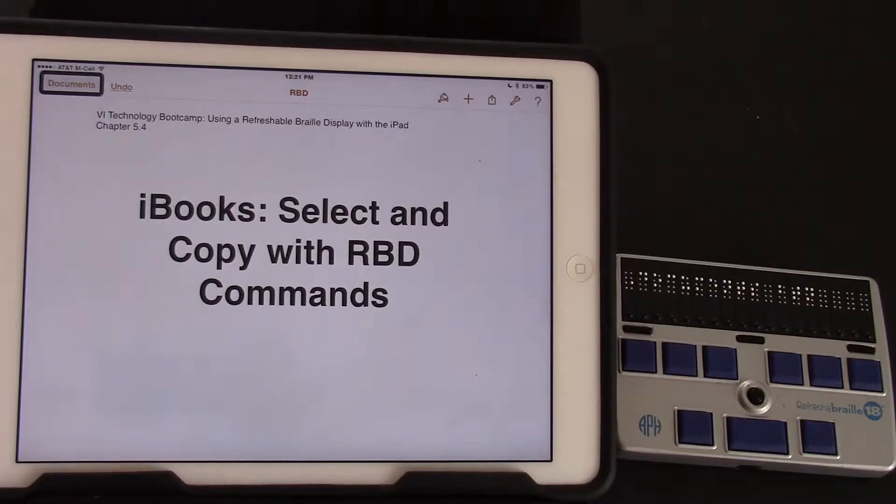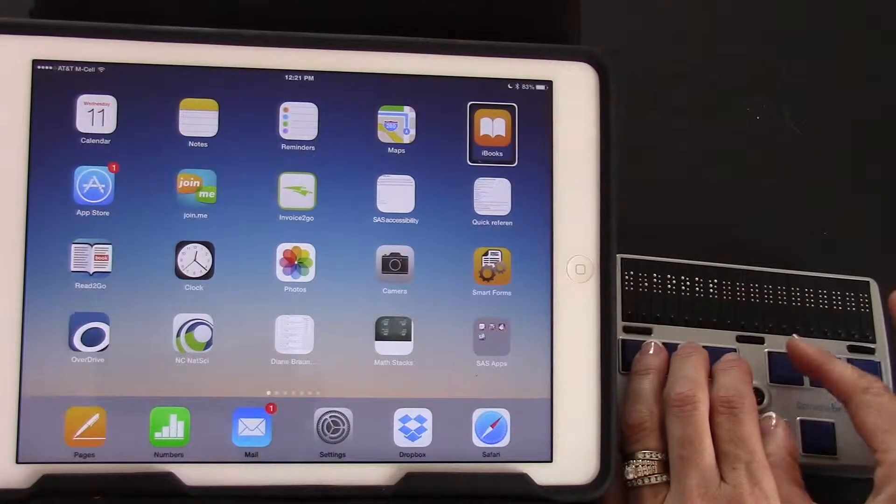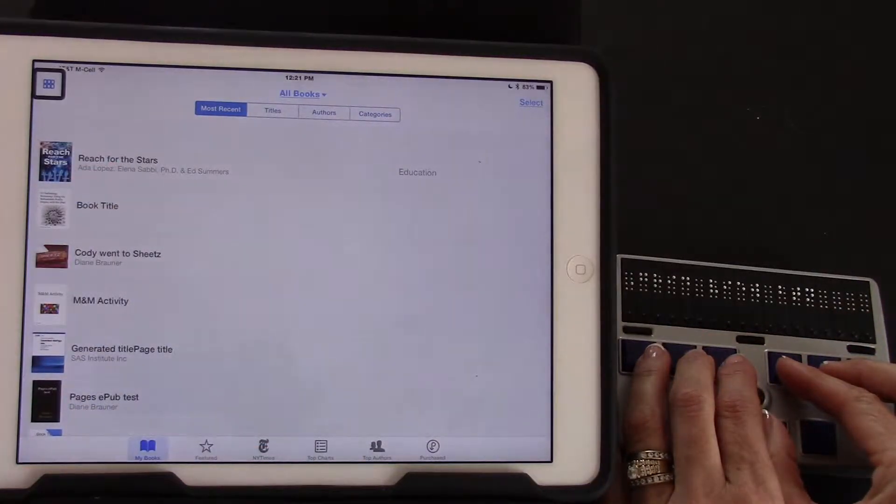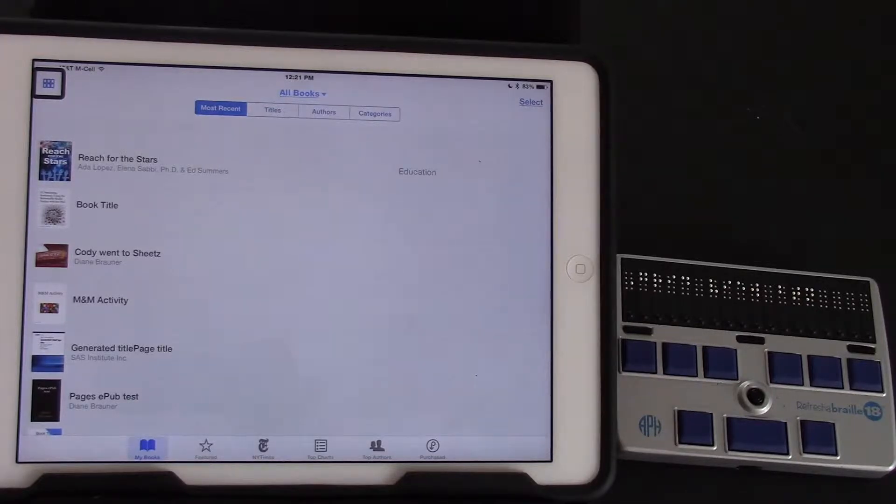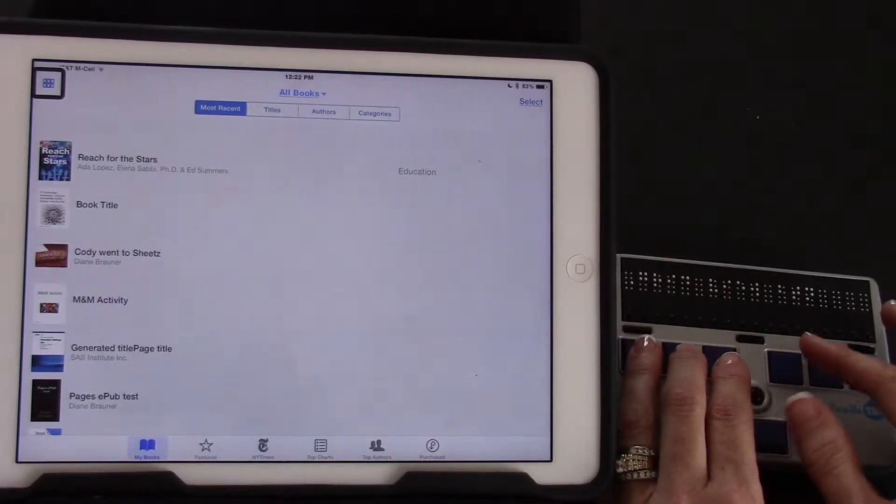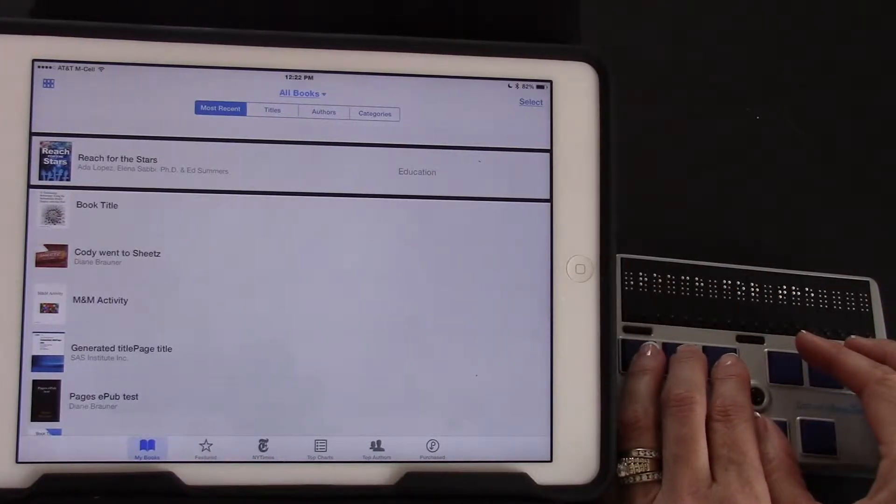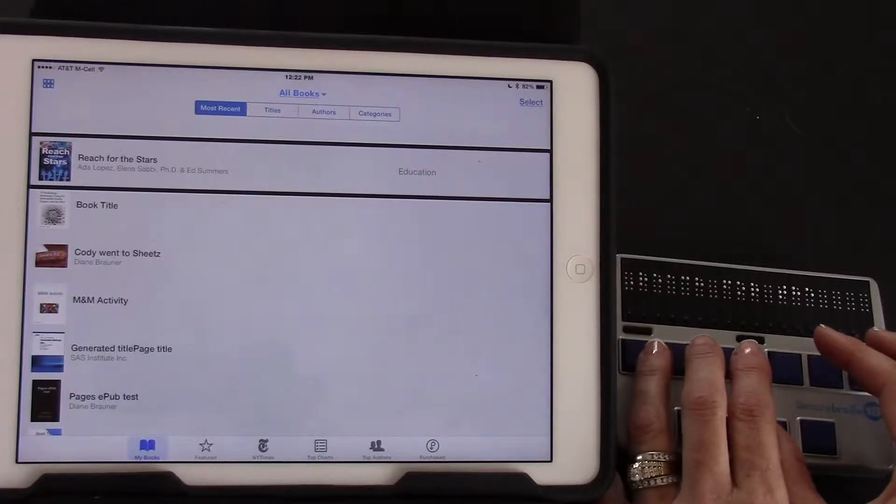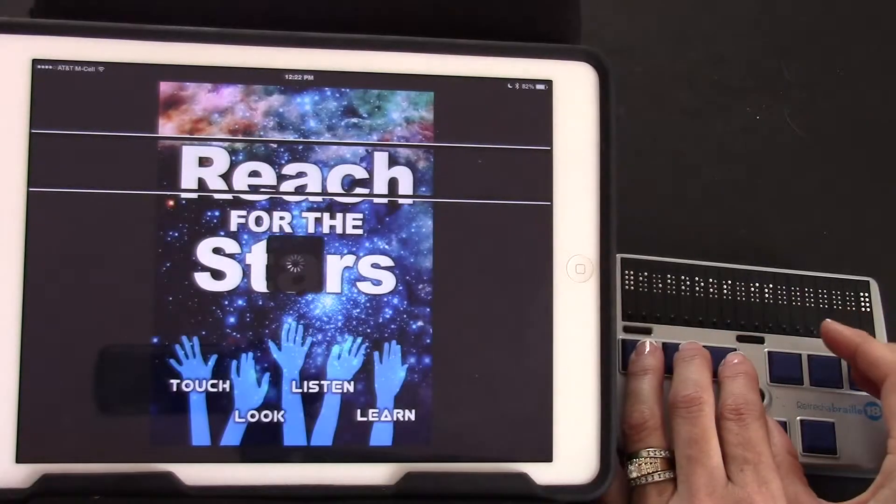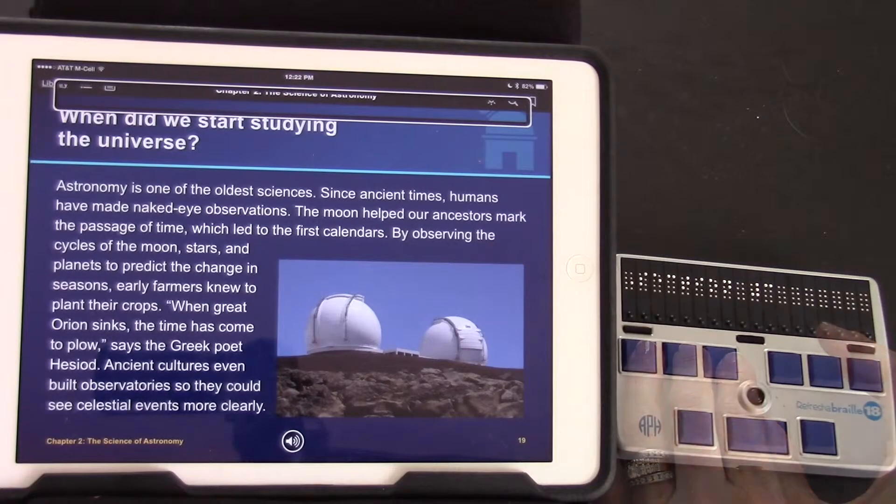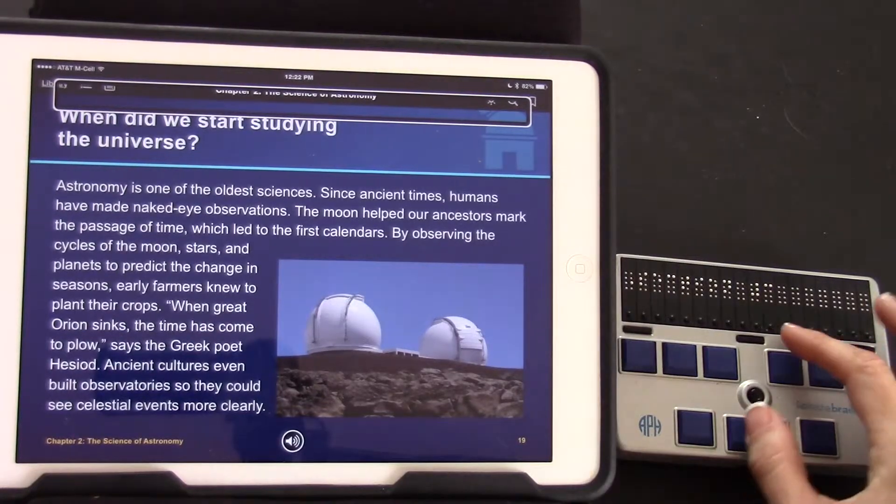This video will demonstrate how to select and copy with refreshable braille display commands in the iBooks app. For this activity I'm going to use the book called Reach for the Stars Touch, Look, Listen and Learn. Any iBook textbook will work. I'm going to move to the desired book using four space and use three six space to open.